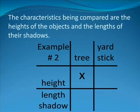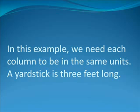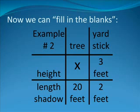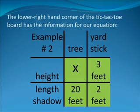The characteristics being compared are the height of the objects and the lengths of their shadows. Thus, we fill in the box as follows. In this example, we need each column to be in the same units. A yardstick is 3 feet long, by definition. Now we can fill in the blanks.